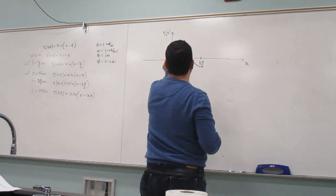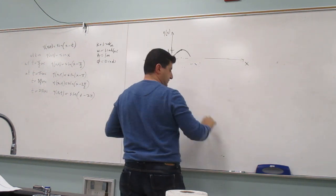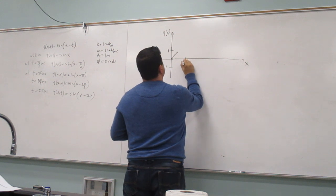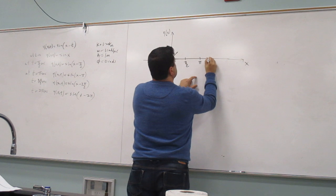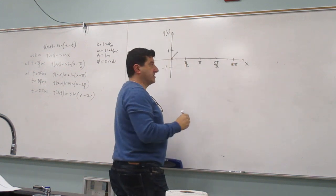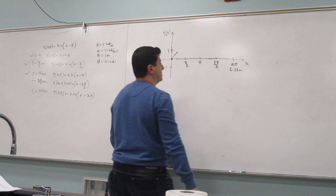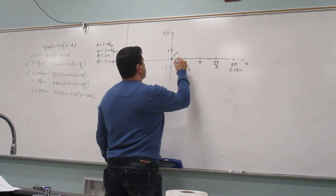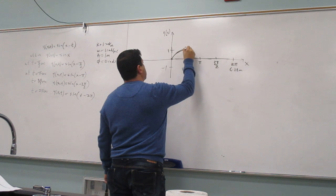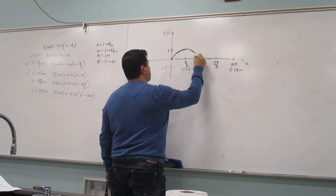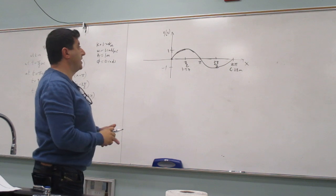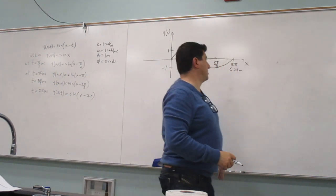To make it to scale, pi over 2 is slightly longer than that. Then you get 3 pi over 2, and 2 pi is 6.28 meters. This is 1.57 meters. The wave goes all the way to 1, and I can keep drawing more until whenever.